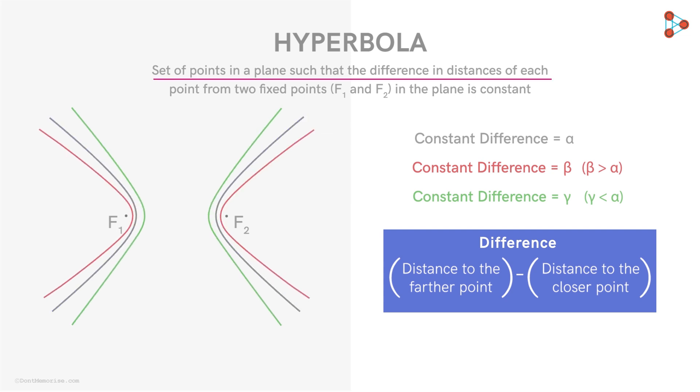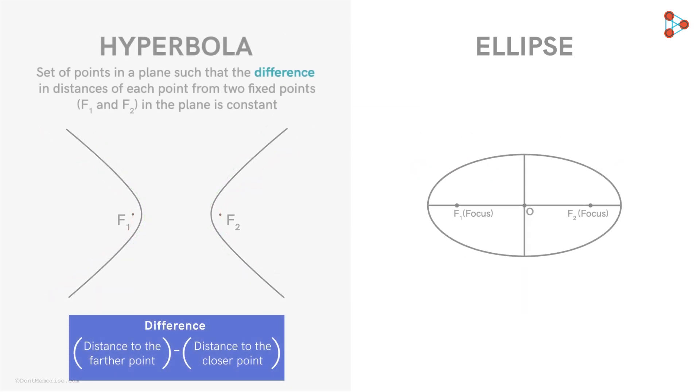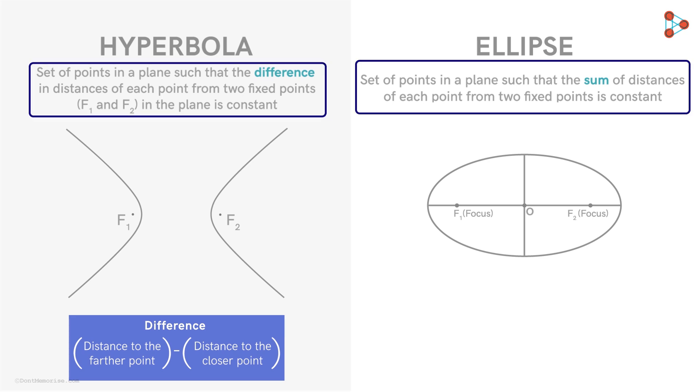Now tell me, doesn't the definition of the hyperbola remind you of any other conic section? That's right, its definition is similar to that of ellipse. We know that an ellipse is a set of points, the sum of whose distances from two fixed points is constant. In the case of the ellipse, we consider the sum of distances, while in the case of the hyperbola, we consider the difference of the distances. So we see that their definitions are similar.